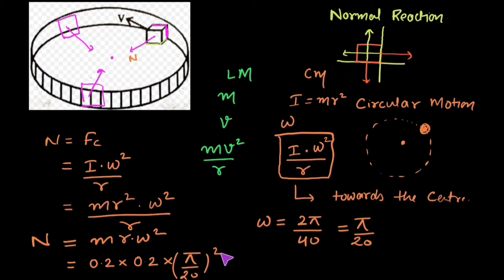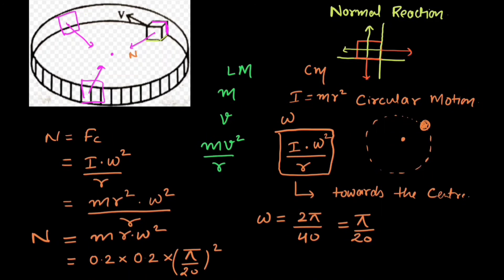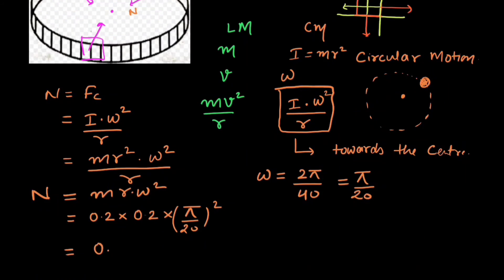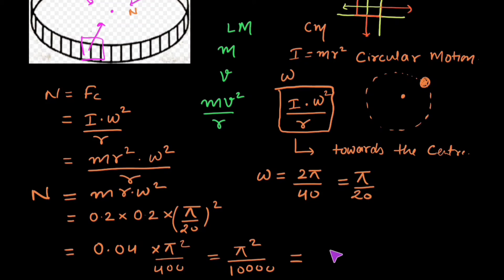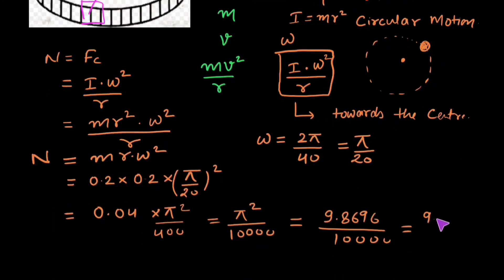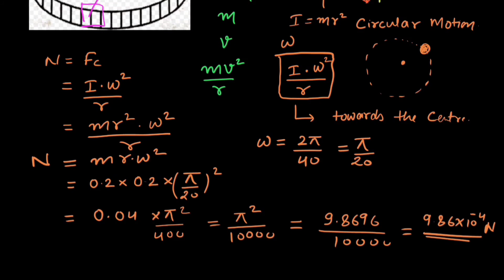We take the square of omega: (π/20)² = π²/400. So the full expression becomes 0.04 × π²/400 = π²/10,000. The value of π² is 9.8696, divided by 10,000, giving 9.86 × 10⁻⁴. The unit is Newtons since normal reaction is a force.